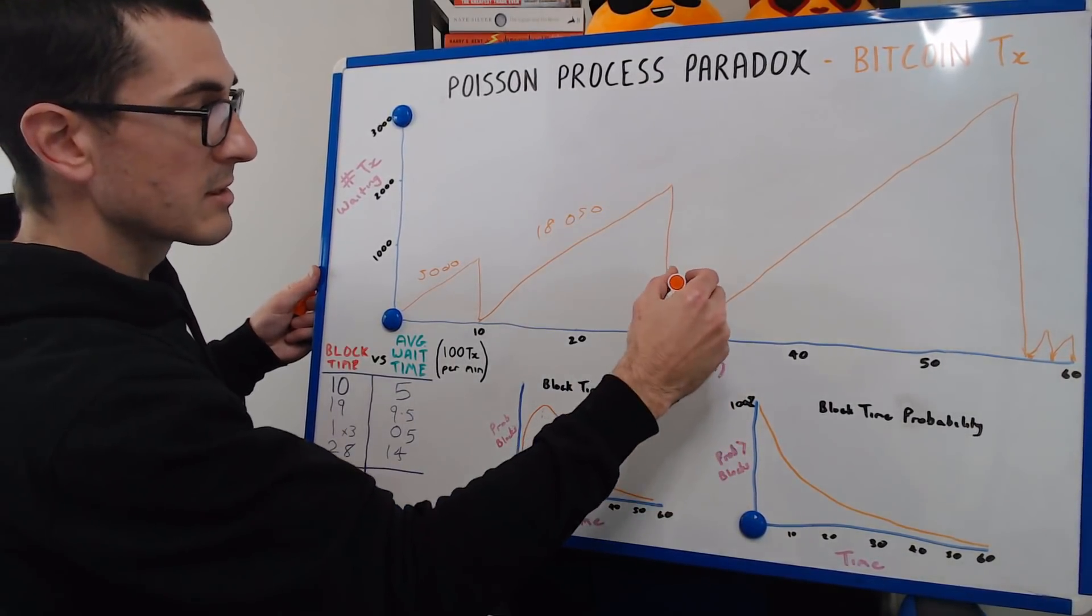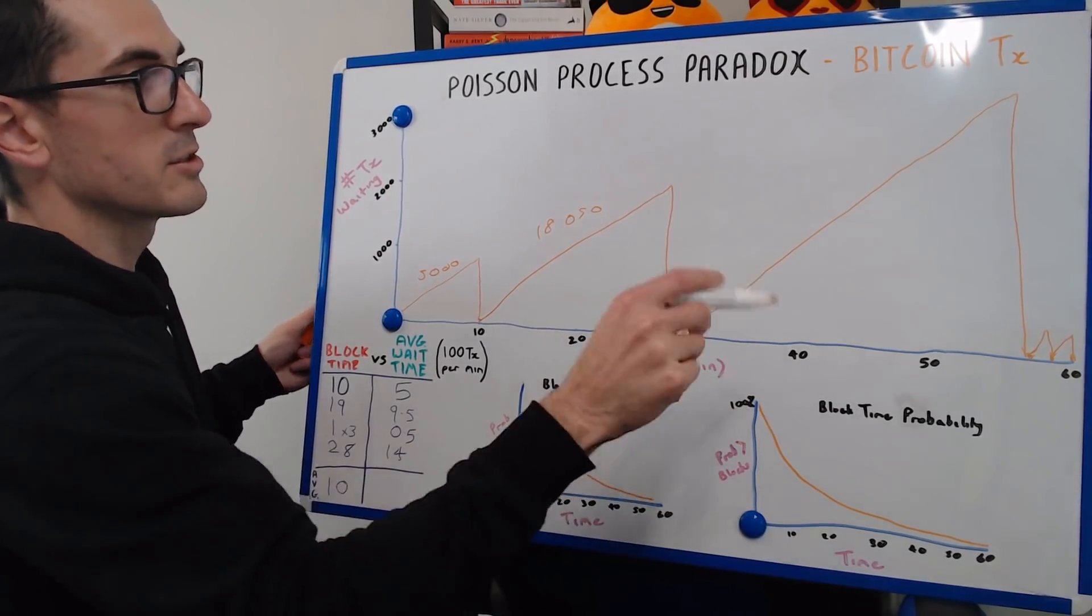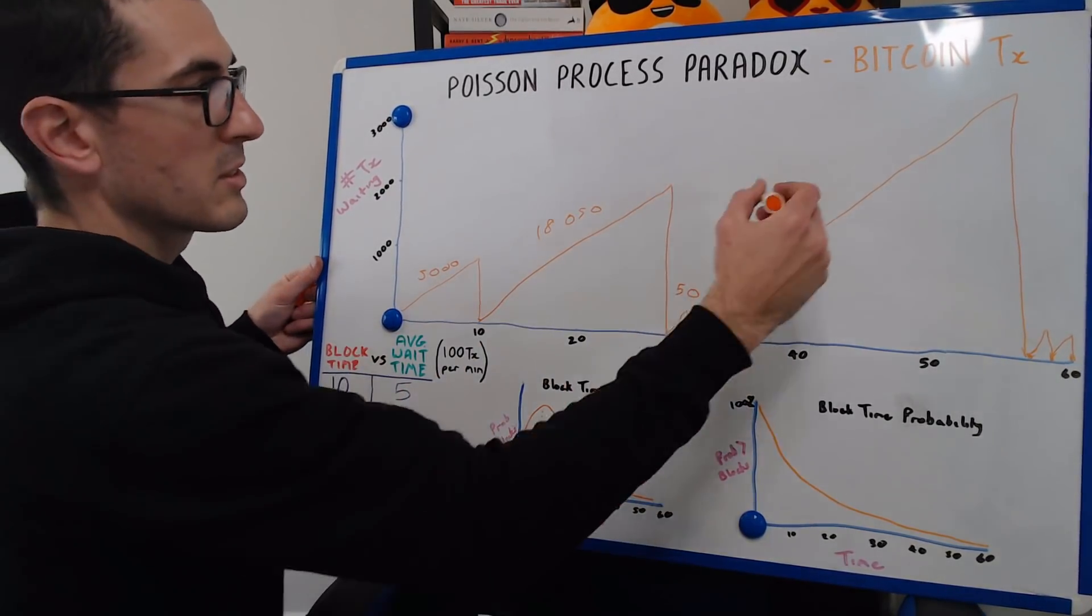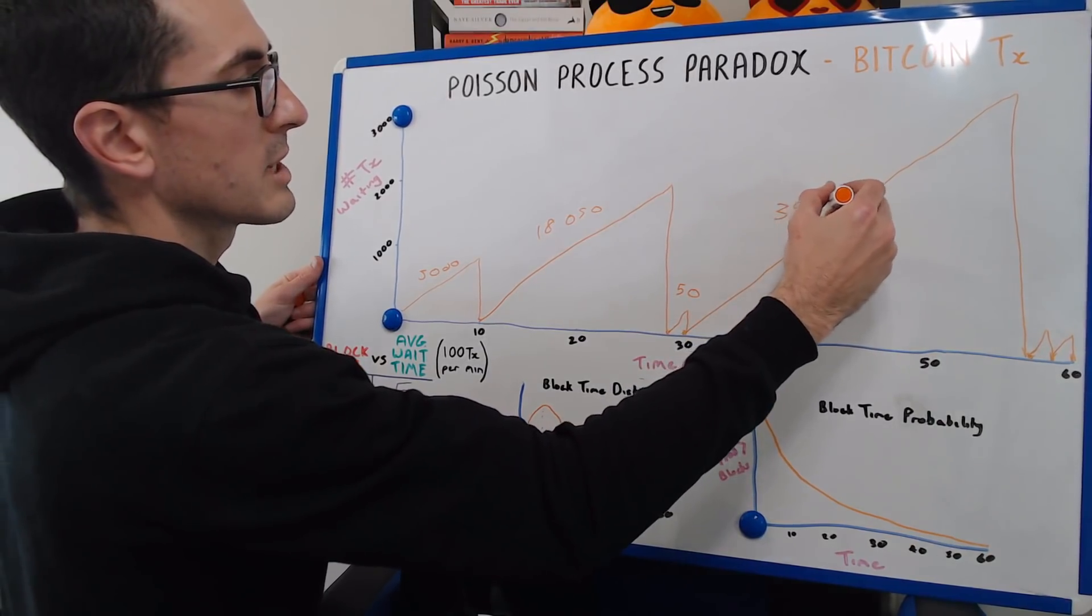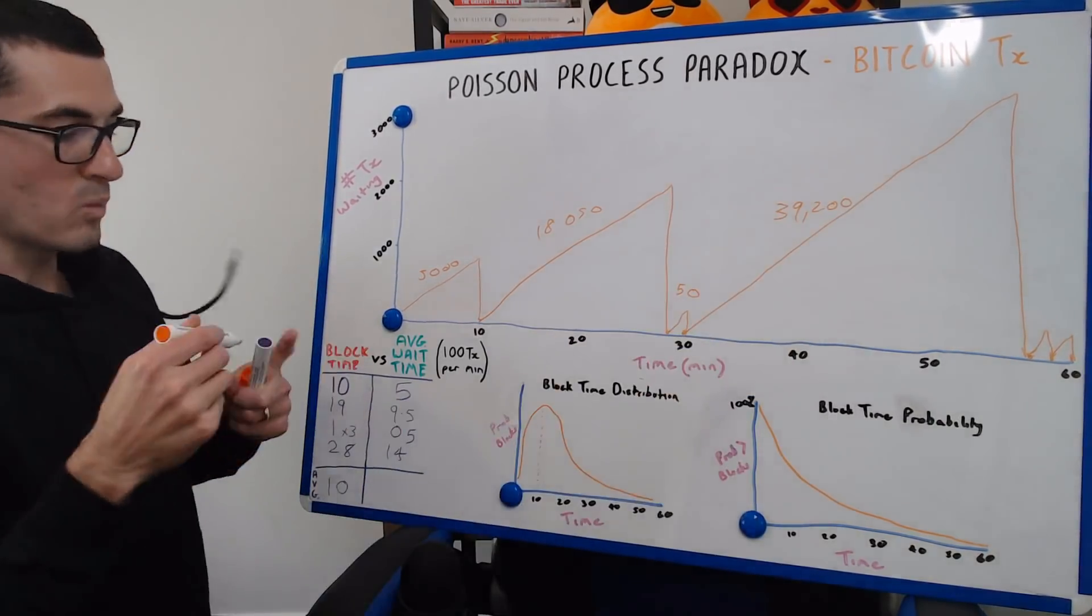We then have 50 for the smaller block, so I won't write those in. And then we've got 39,200 transaction minutes weighted total.